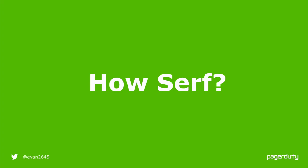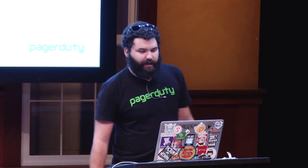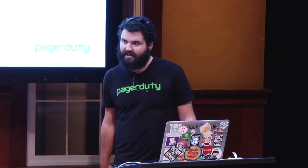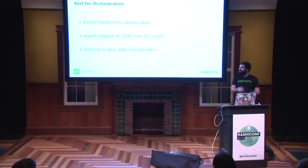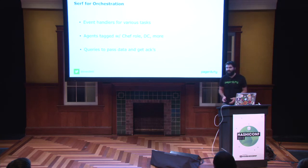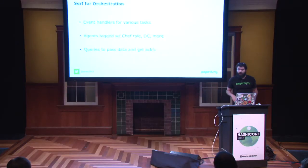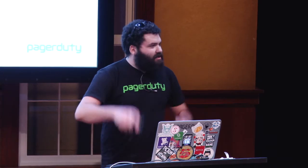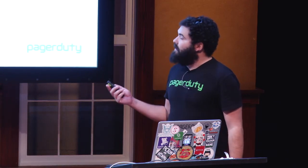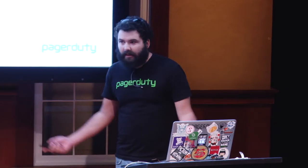How have we done all this? We have event handlers that maintain various tasks for us. We tag Chef roles, hosting providers, and environments — lots of metadata — onto each SERF agent in the cluster. Using those tags, we can leverage queries to filter hosts out, and receive acknowledgments and replies from those hosts. We can say, what's the load in this data center? We think it can dispatch commands pretty reliably and it's a good starting point.